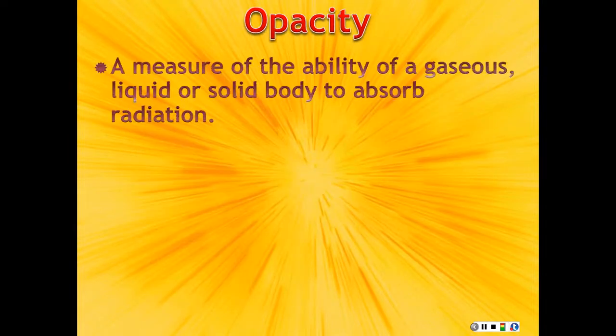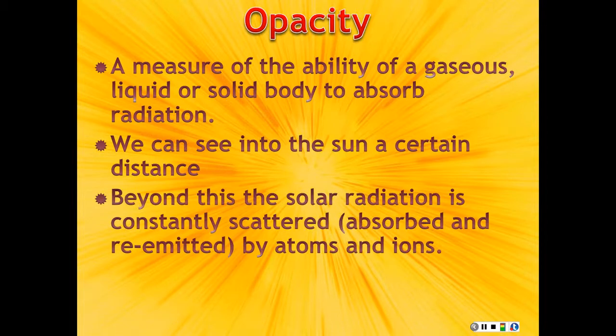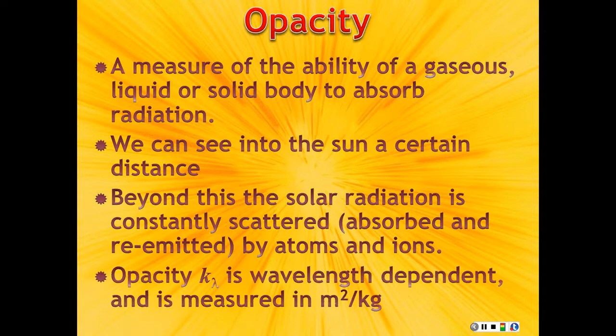Now, I just want to talk a little bit about opacity because this matters for the interior as well. Opacity is just from the term opaque. It is the ability of something to absorb radiation. And so we can see into the Sun a certain distance and beyond that distance, the radiation is completely scattered. Opacity is usually given by κ and its wavelength dependency at the subscript λ. And it's usually measured in meters squared per kilogram.